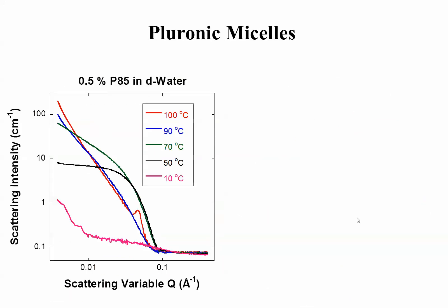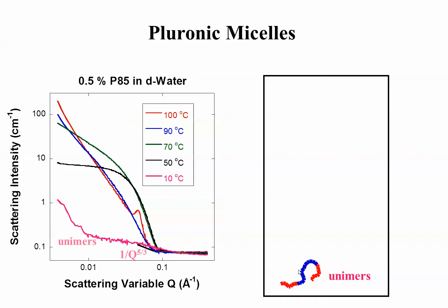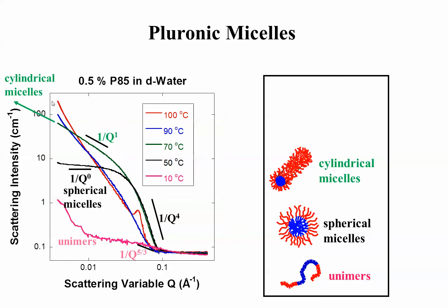I'll show you data for half a percent P85 in deuterated water. At low temperature, you get 1 over Q to the 5/3, it's fully swollen coils, we call them unimers. You heat up at 50 degrees, you get spherical micelles. Look at the curves: 1 over Q to the 0, 1 over Q to the 4, this is a smooth surface, well compact particles. Then, you heat up 70 degrees, you get 1 over Q 1, 1 over Q 4, these are cylindrical micelles. You heat up further, 90 degrees, you get 1 over Q square, and 1 over Q 4, these are lamellar micelles. So, you get phase transitions just by changing temperature.